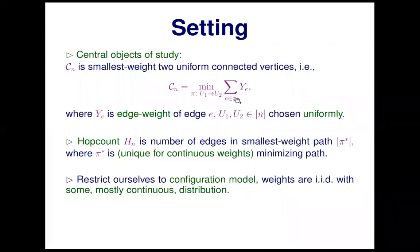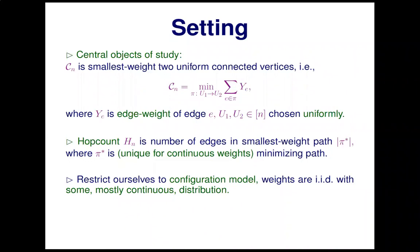We're also interested in how many people are involved in traversing a rumor, which is called the hop count, denoted h_n — the number of edges in the smallest weight path. We assume our weights are continuous, which has the nice feature that this minimal path will be unique, so we can unambiguously talk about the number of edges in it. If distributions were discrete, there might be several paths of equal weight with different numbers of edges.